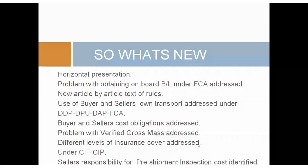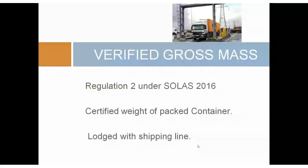So we can more or less say there are a lot of cosmetic changes: horizontal presentation, new article-by-article rules, use of seller's and buyer's transport under DDP etc., and then the rest is fairly cosmetic. But there are real new ones: the bill of lading problem under FCA, the insurance split between CIF and CIP, and pre-shipment inspection. Any questions, please put them in and I'll do my best to answer them as we go along.